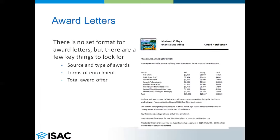There are a few key things to look for on an award letter, such as the source and type of award, terms of enrollment, and total award offer. However, they may all look a bit different, and this can make it difficult to make side-by-side comparisons.